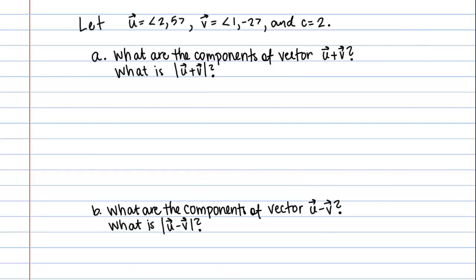Let's work through an example that involves doing operations with vector components. Here are the directions. Let the vector U equal 2, 5, the vector V equal 1, negative 2, and C which is a scalar here equal 2.